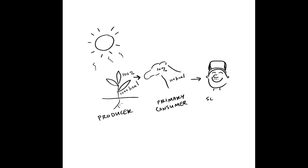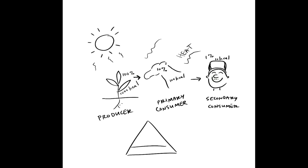We've got a farmer as a secondary consumer, and all that extra energy goes away. You can see it's now 1% kilocalories. If you remember the energy pyramid, it starts just like a food chain web.